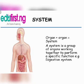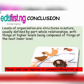The last level is the system. A system is the result of organ plus organ working together. A system is a group of organs working together to perform a specific function. Examples include the digestive system, the excretory system, and so on.